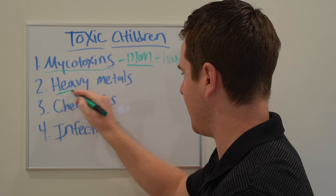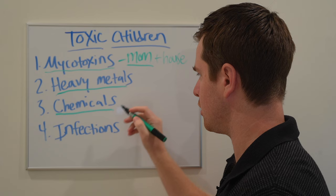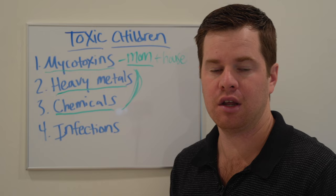So number two, heavy metals. Now, we can measure both of these via urine. In fact, chemicals we can measure via urine as well. So we'll put these in the same category because they're both going to impact the gut, the brain, as well as development and neurotransmitter function.